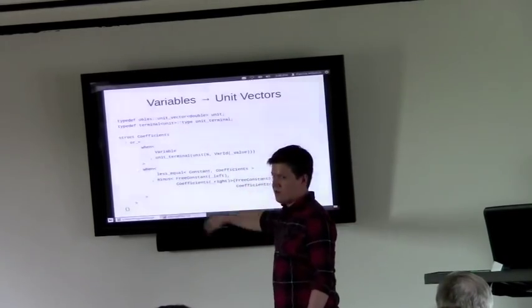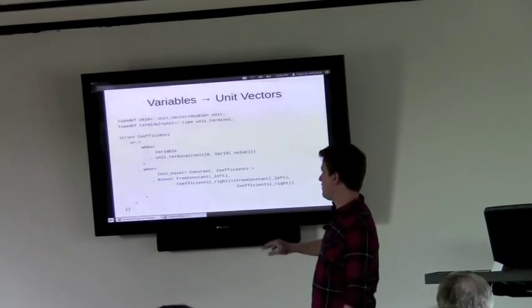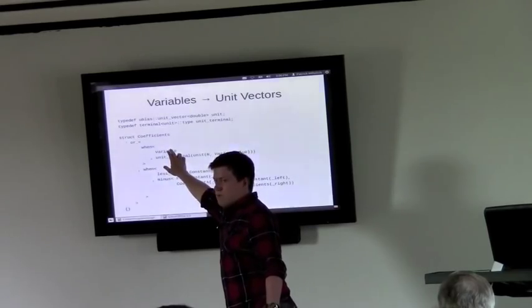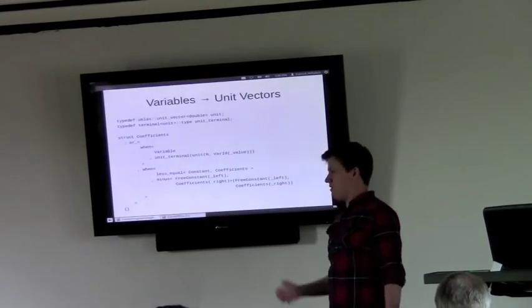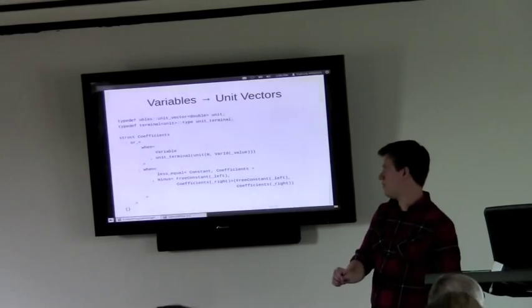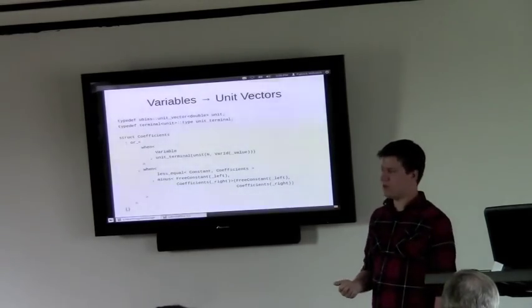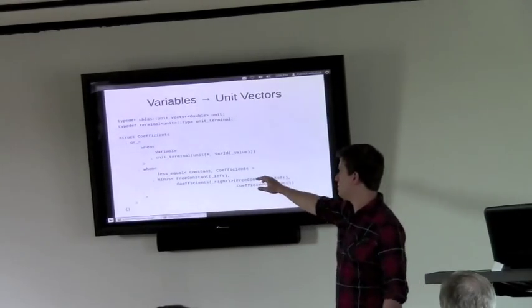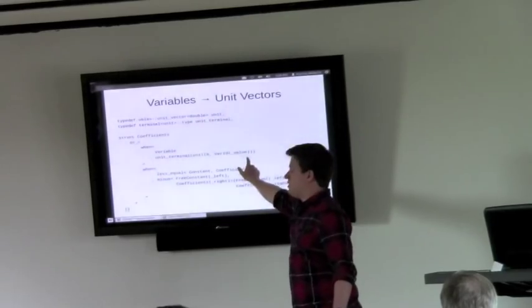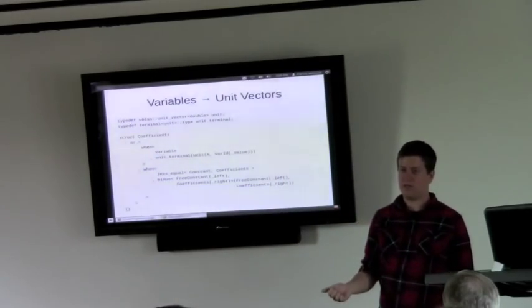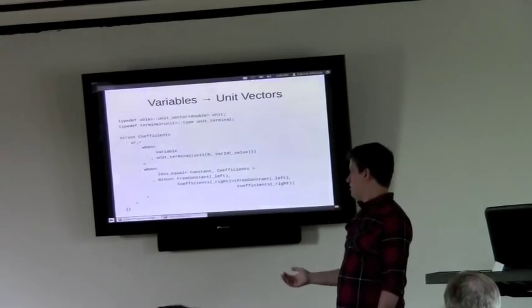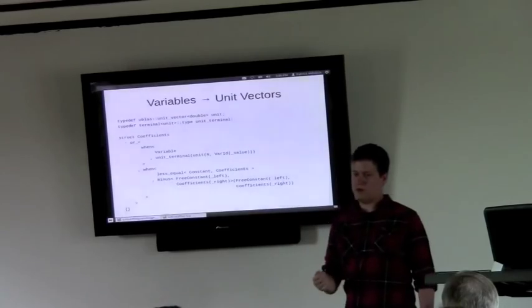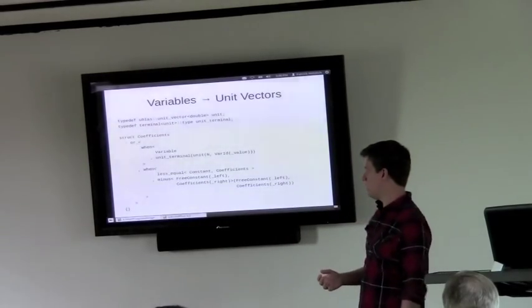So that's how it goes through the tree. But you can also define a second term, which is what you want to replace the first term with when you get a match. Coefficients is actually much, much longer. This has a bunch of cases that it needs to take into account. But this is the crucial stuff. So when proto encounters a variable, it replaces that with a new terminal that is just wrapping a unit vector.